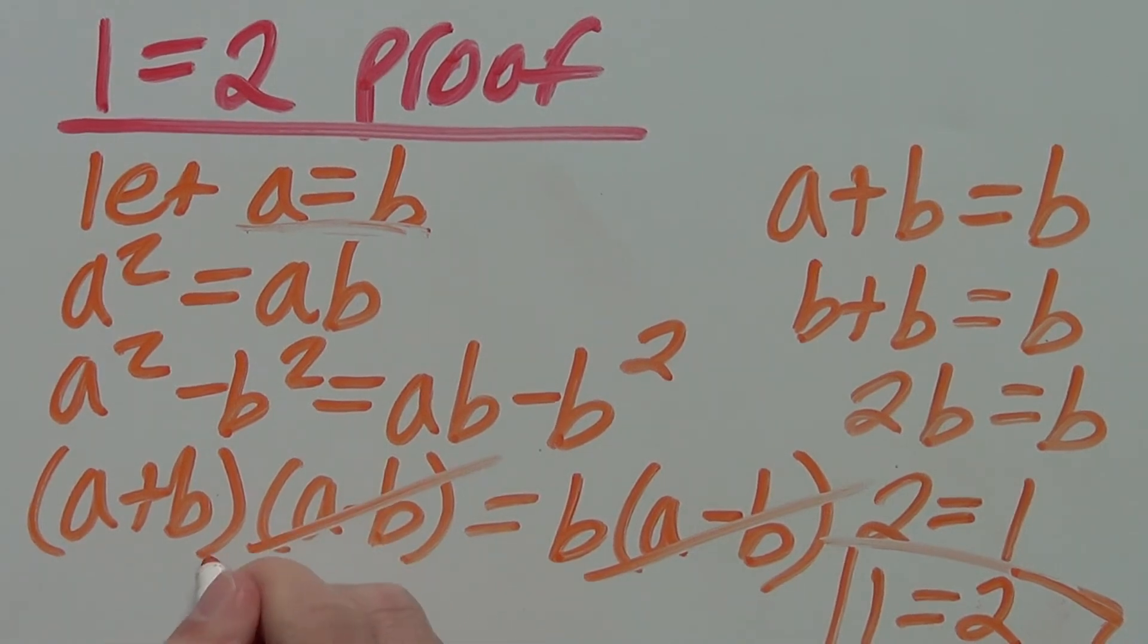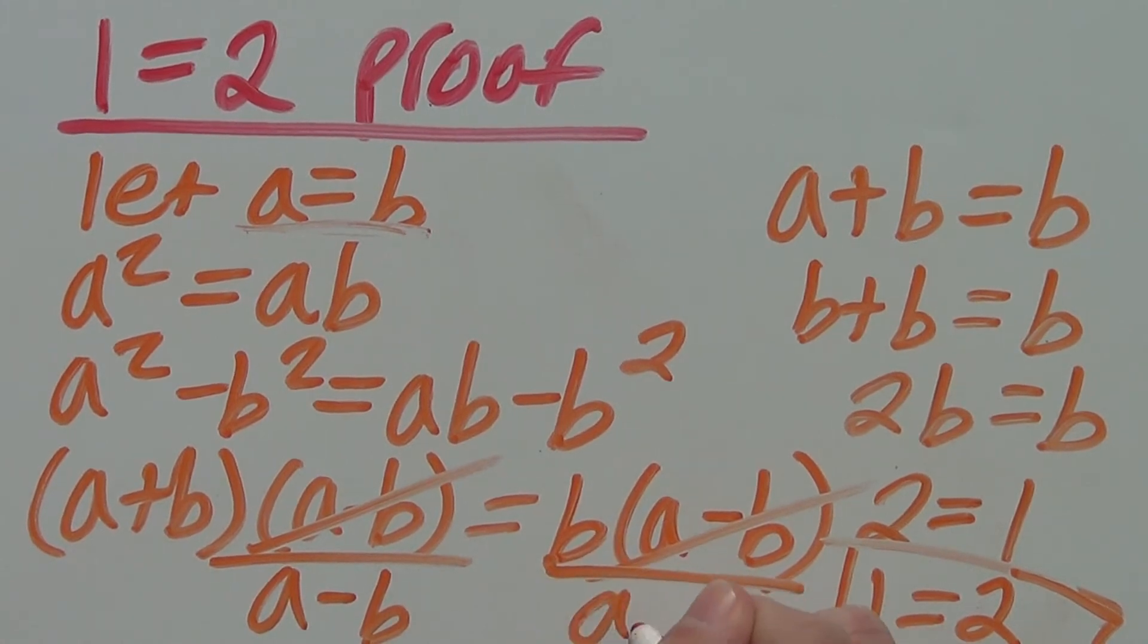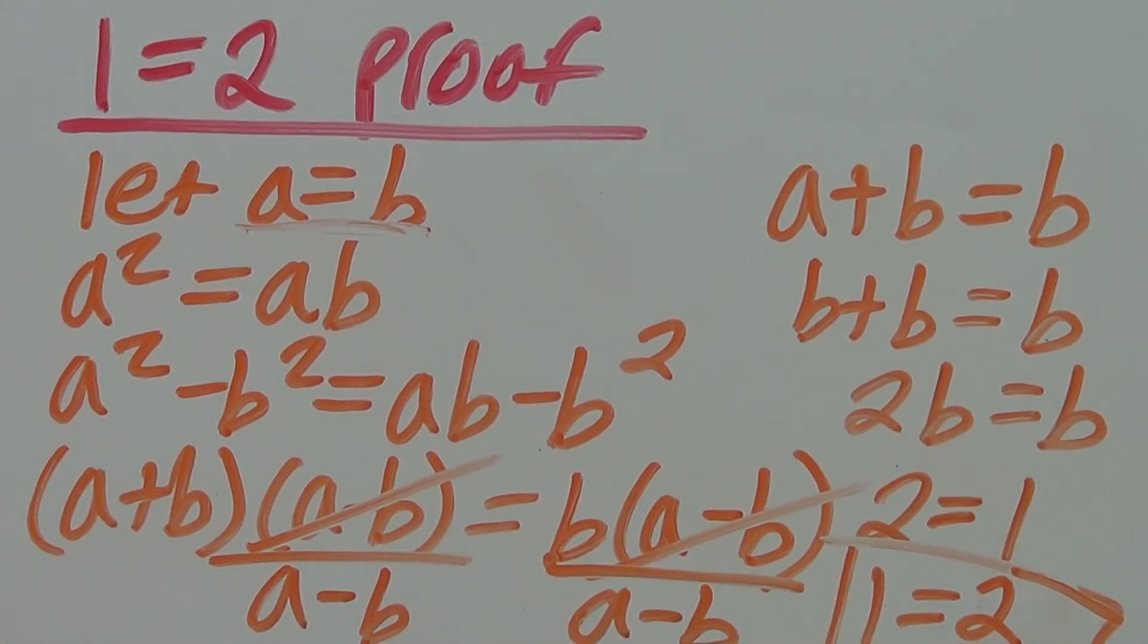So now the problem is over here. When we are dividing by a minus b on both sides, we are not really dividing by a minus b. Because if you remember a and b are the same thing. So the same number minus the same number is really 0. So when we think we are dividing by a minus b we are really dividing by 0, which messes this whole thing up.